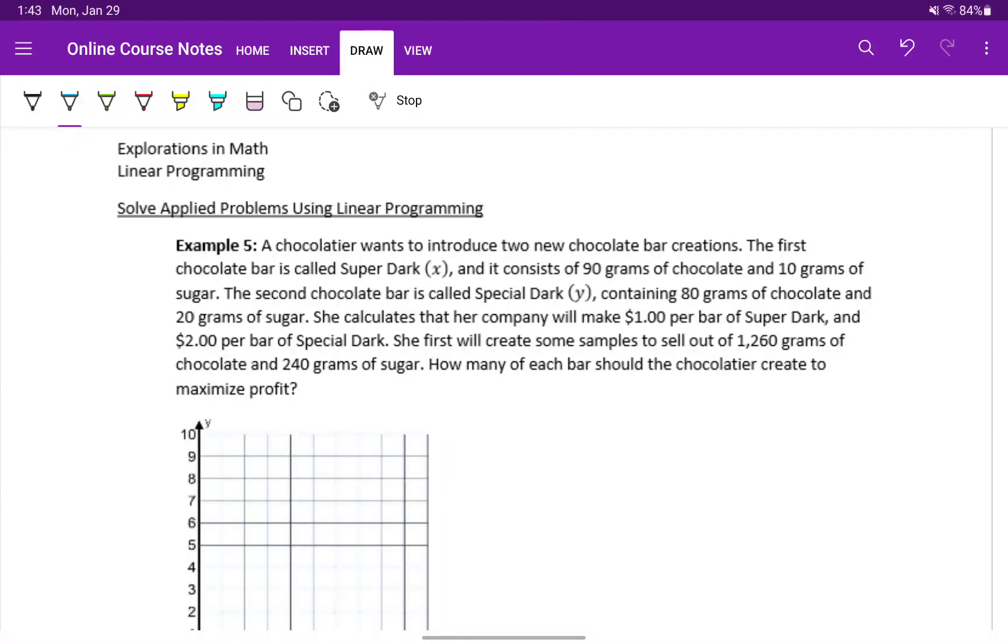We've covered how to construct the feasible region by finding the coordinate points that map out that polygon. We've looked at how to use those x-y pairs to maximize or minimize an objective function. Now we want to put that together along with the idea of actually creating the inequalities, pulling those out of a word problem to look at some applications.